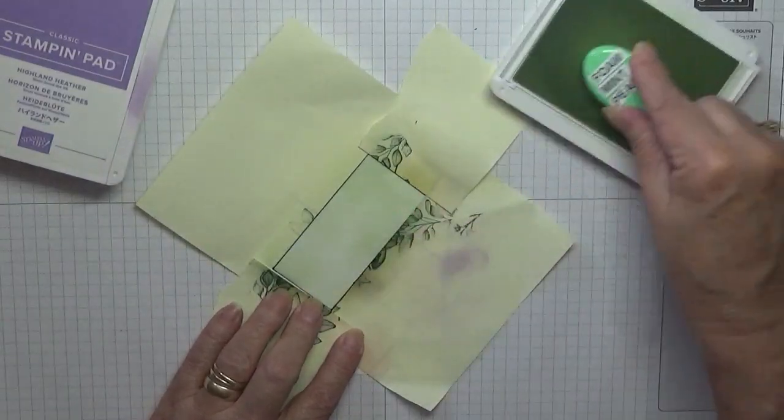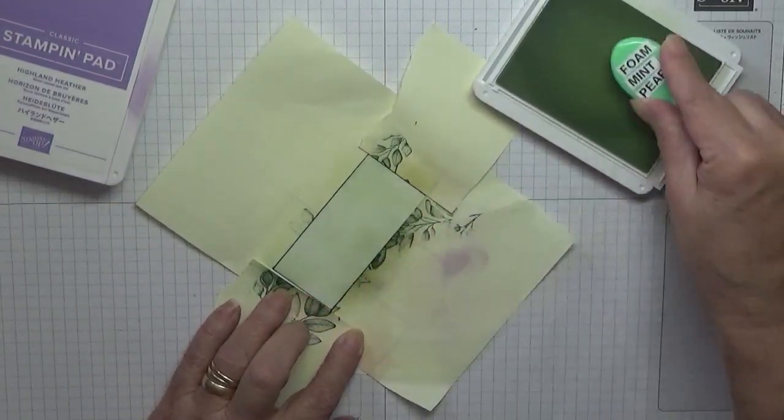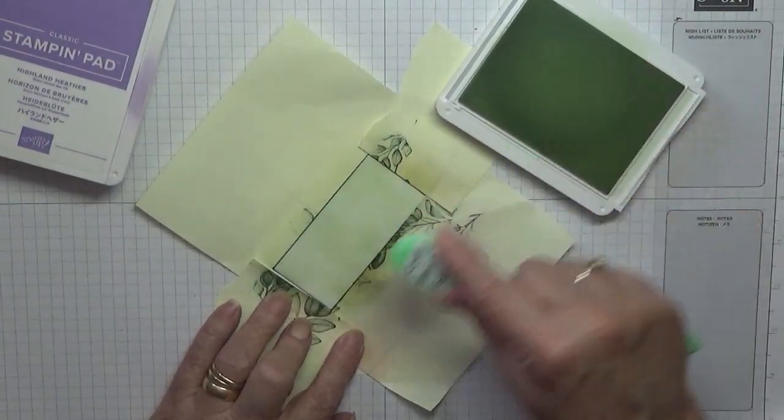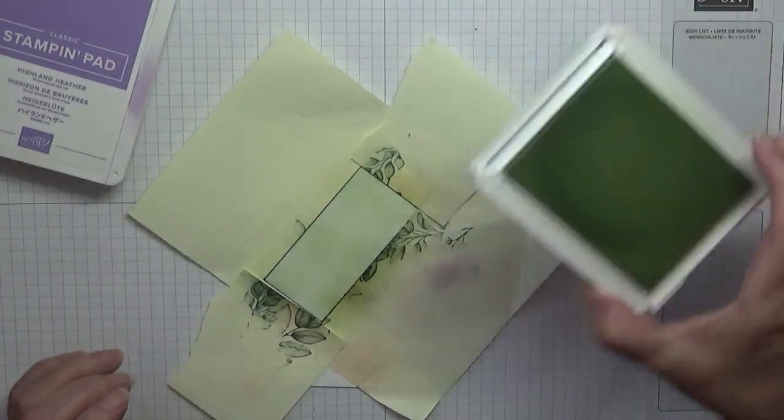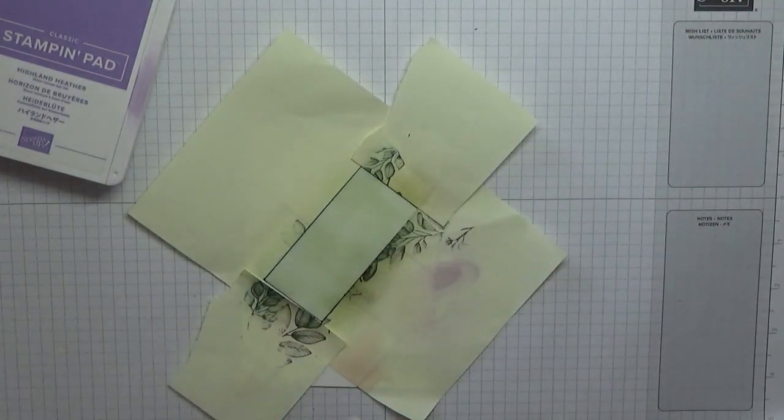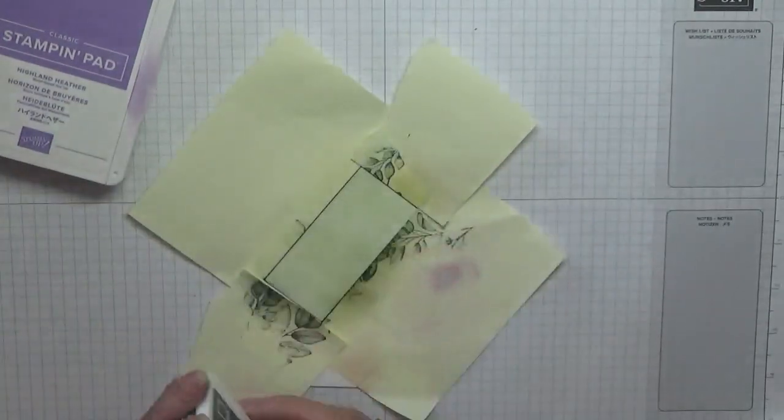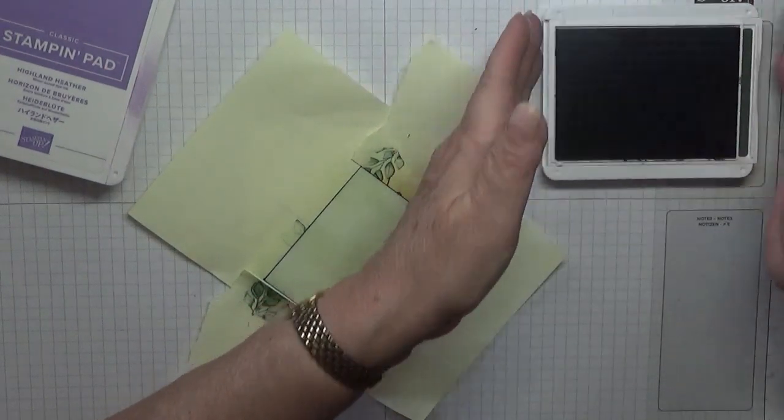I don't want it all smooth and perfect. Not that I ever do it perfect, but you know what I mean. You need it dark places and light places. Right, that will do for now. And then with our Evening Evergreen, we're going to stamp our design in the middle.